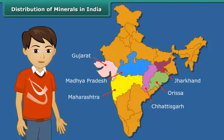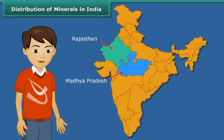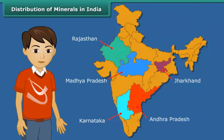Maharashtra and Tamil Nadu. Copper is mainly produced in Rajasthan, Madhya Pradesh, Jharkhand, Karnataka and Andhra Pradesh.